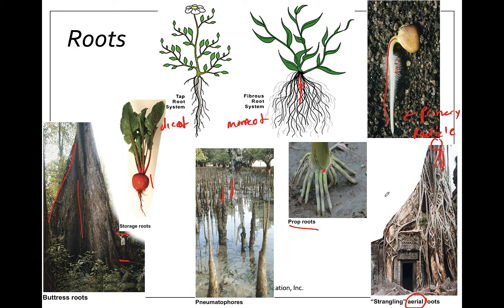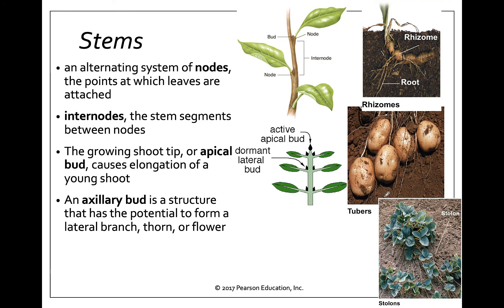Moving up the plant, the next organ is the stem. Stems hold the leaves and elevate the photosynthetic elements up where the light is. Stems can grow in different directions to help leaves bend toward the sun to maximize photosynthesis. They form an alternating system of nodes — a node on one side, then the other, sometimes alternating left/right or whorling around the plant. Nodes are where the leaves come off. An internode is the space between nodes — inter literally means between.